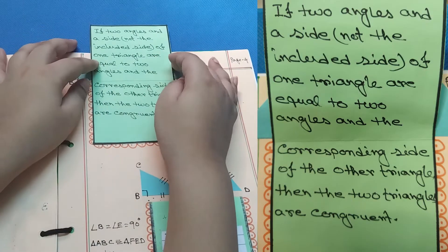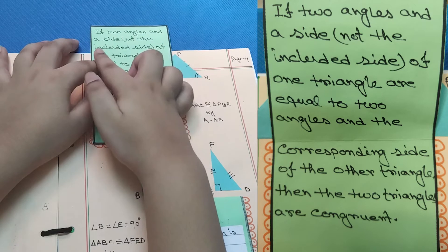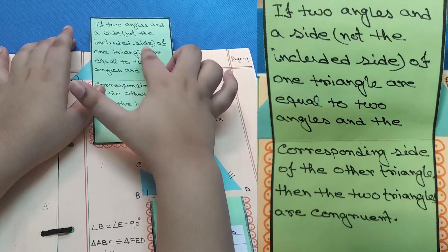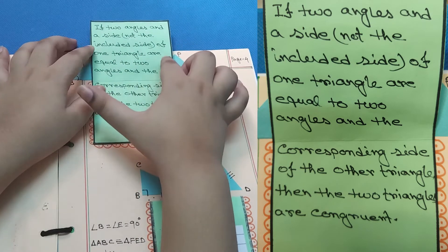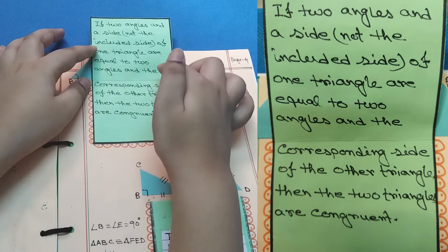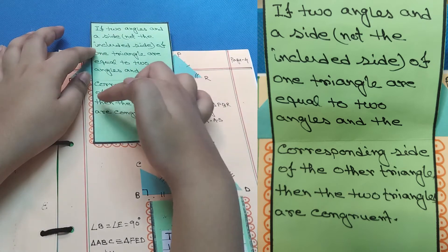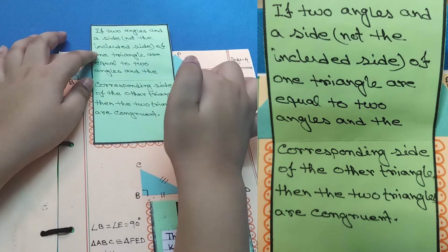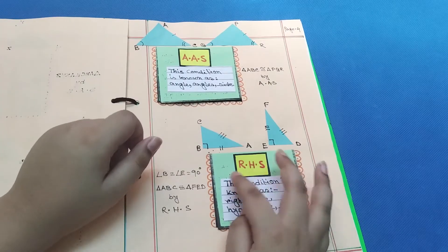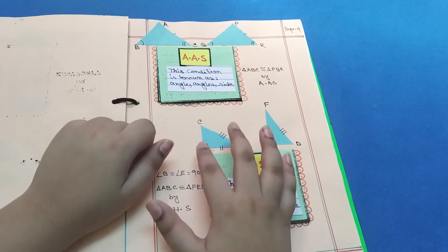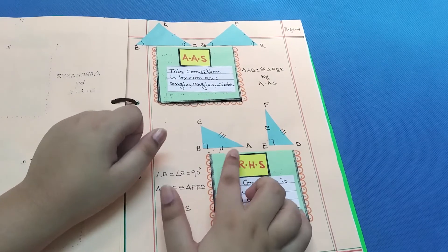Let's fold this out. If two angles and a side, not the included side, of one triangle are equal to two angles and the corresponding side of the other triangle, then the two triangles are congruent. Next is RHS. I've drawn a figure for it.